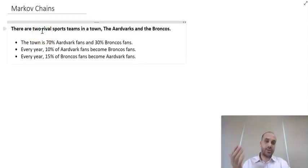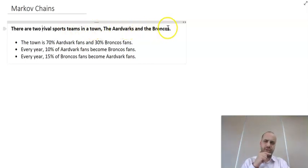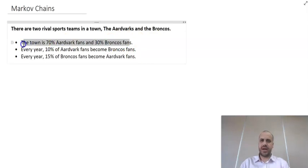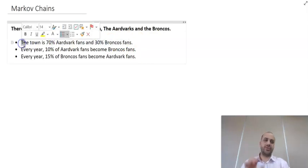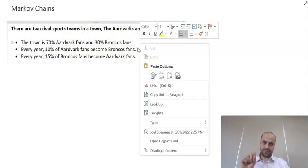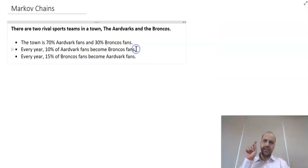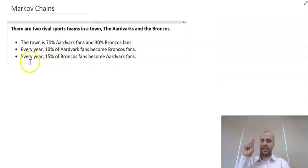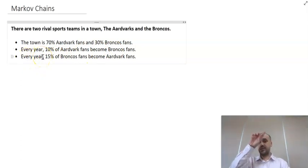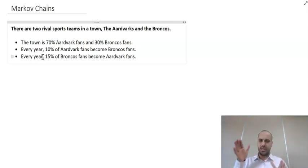For example, there is a hypothetical town with two sports teams, the Aardvarks and the Broncos. At the moment, today, the town is 70% Aardvark fans and 30% Bronco fans. But every year, 10% of the Aardvark fans become Bronco fans, and every year, 15% of the Bronco fans become Aardvark fans. So some amount of them are swapping each year.